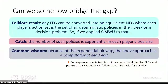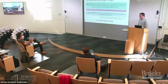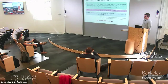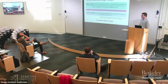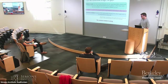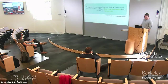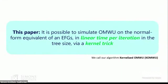The common wisdom is wrong. What this paper shows is that it is possible to simulate optimistic multiplicative weights on the normal form equivalent of an extensive form game in linear time per iteration in the tree size, via a kernel trick. We call this algorithm kernelized optimistic multiplicative weights.